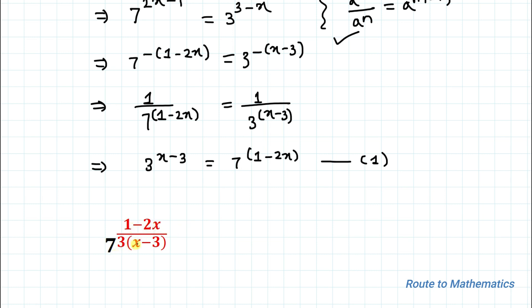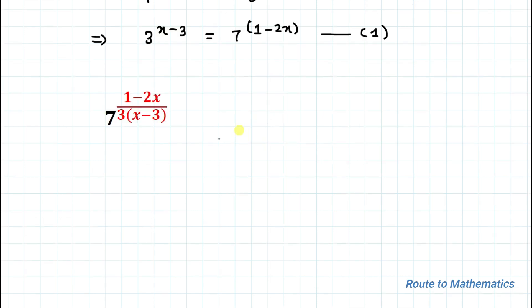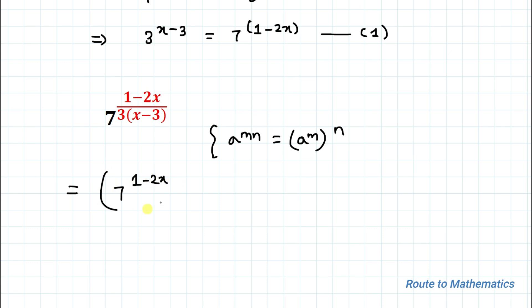Here we will apply the exponential rule: a to the power mn equals a to the power m, to the power n. By applying this rule we can write 7 to the power (1 minus 2x), whole to the power (1 by 3), multiplied with (x minus 3). From equation 1 we have 7 to the power (1 minus 2x) as 3 to the power (x minus 3).